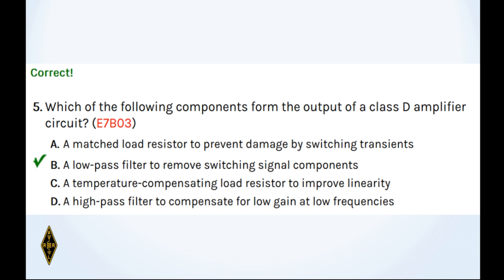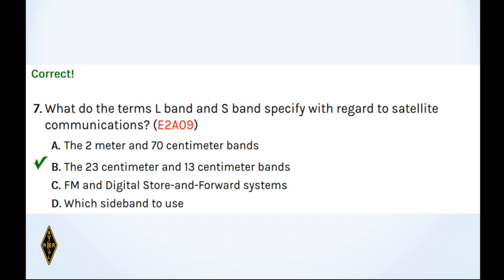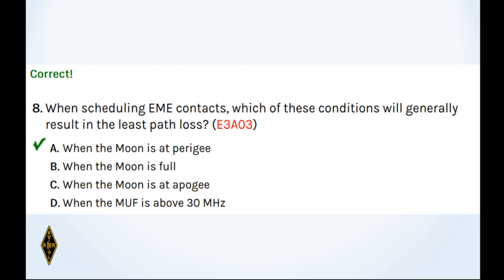On which of the following frequencies is one likely to find FM frequency modulated ATV, amateur television transmissions? 1255. The highest frequency. Because FM is going to require more bandwidth than just 6 MHz. So 6A. And what do the terms L-band and S-band specify? Well, those are the 23 centimeter and the 13 centimeter bands. And 8. When scheduling Earth-Moon-Earth contacts, which of these conditions will generally result in the least path loss? Well, when the Moon is closest to the Earth, which is also known as perigee. So 8A.